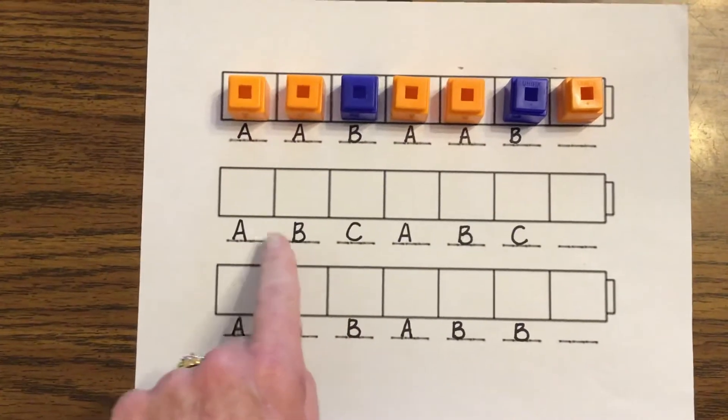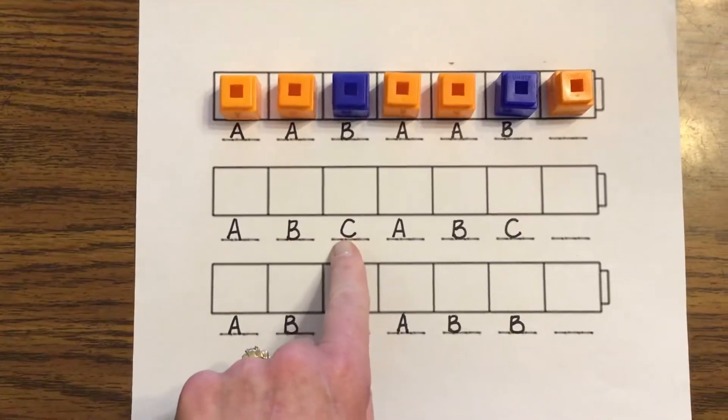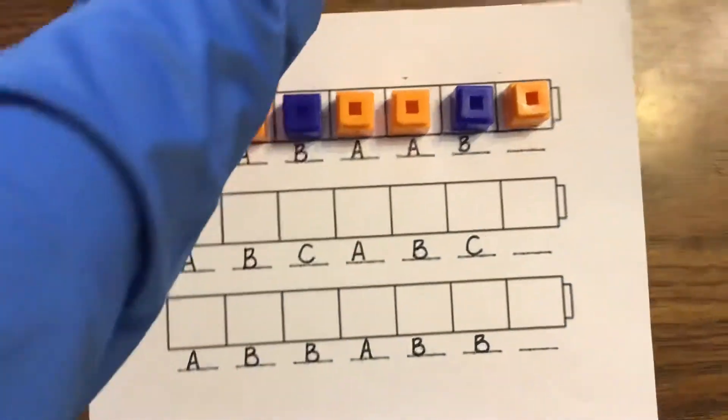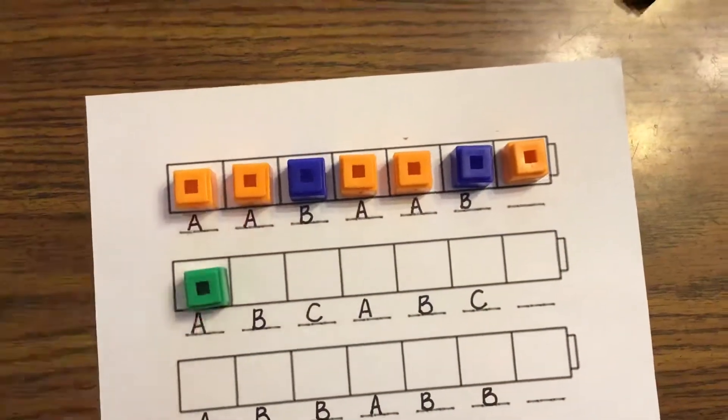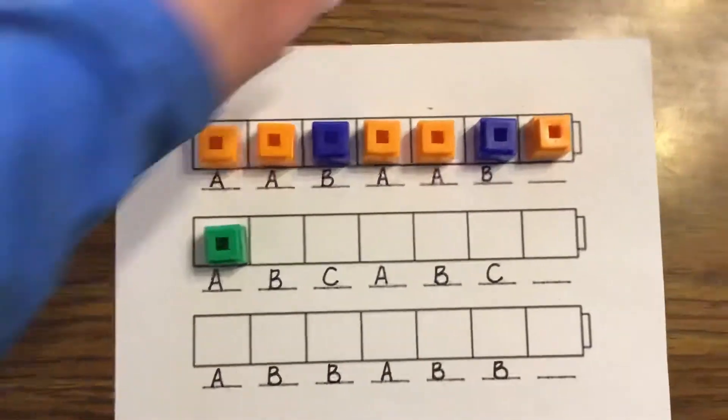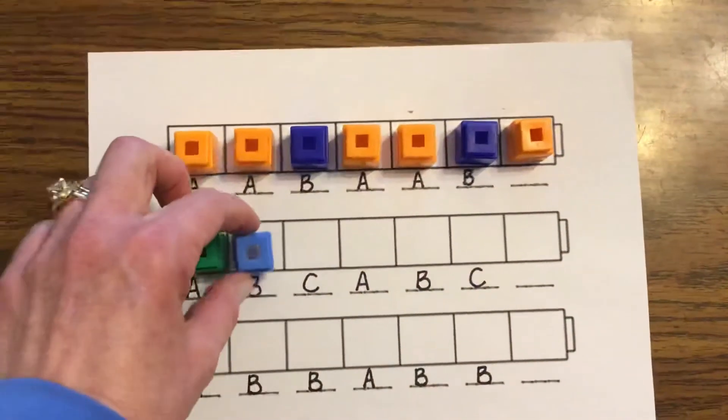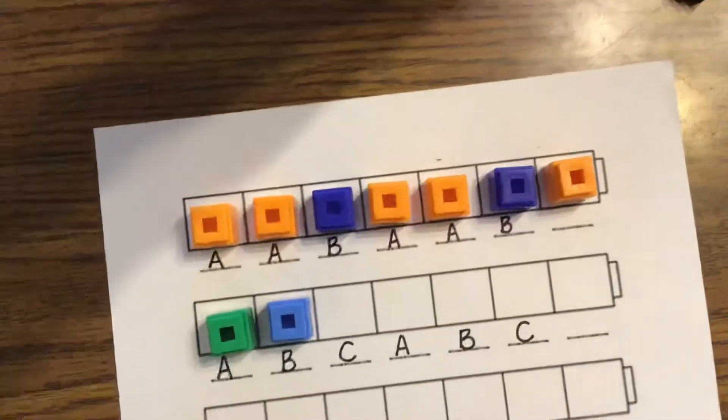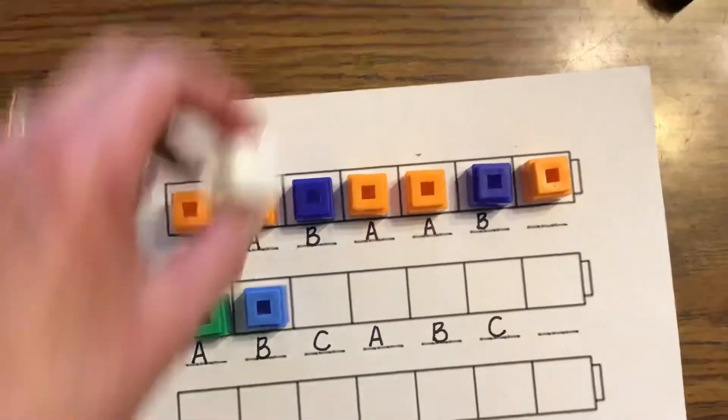I know that each letter is going to be a different color. So I'm going to have my A be green. My B will be blue. And my C will be white.